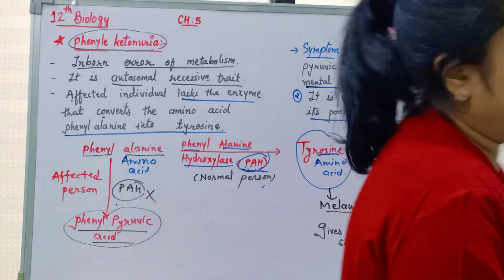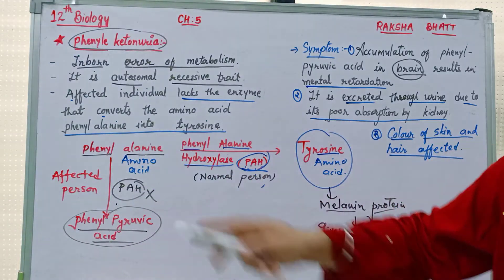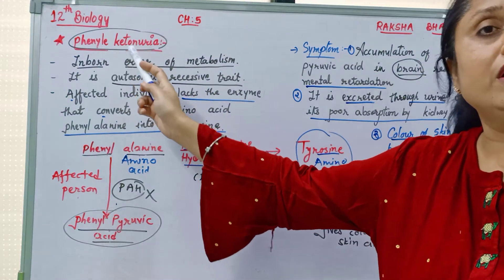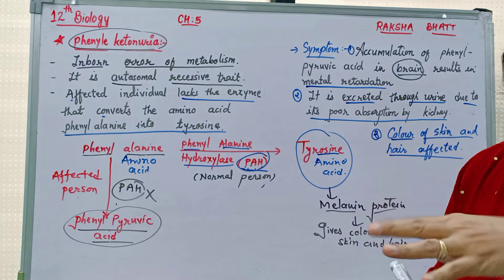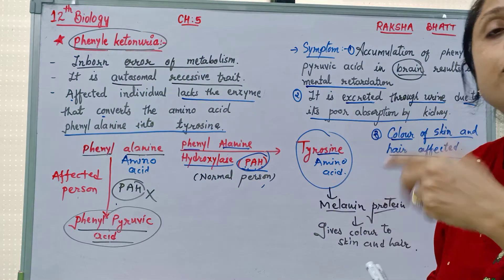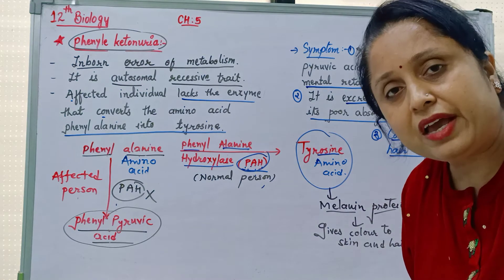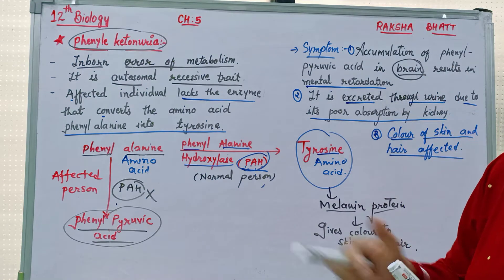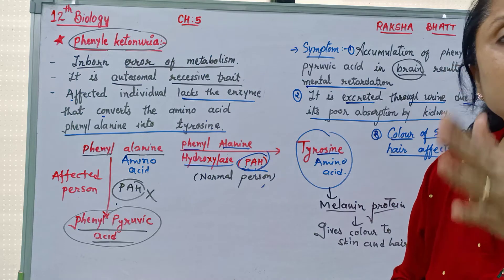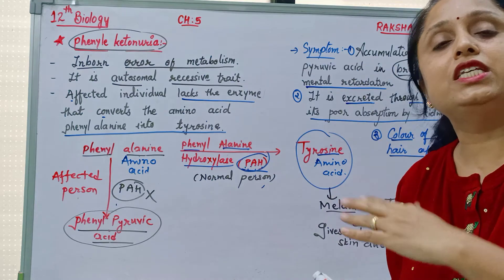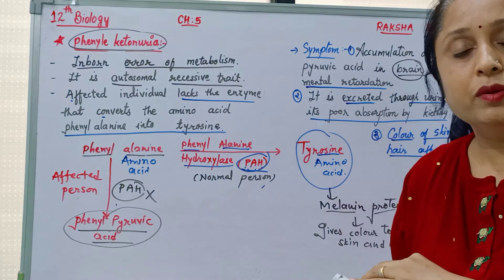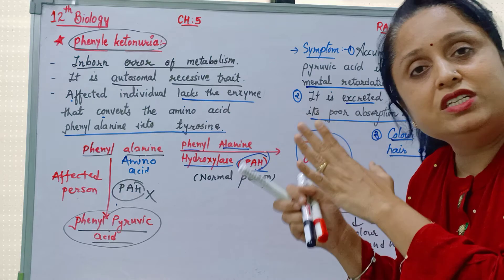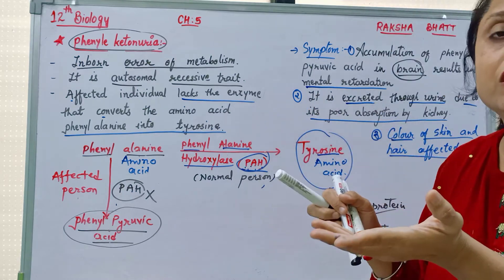This is an inborn error of metabolism — the problem occurs when the enzyme is not synthesized. It is an autosomal recessive trait, meaning the recessive genes are present on the autosomes — the first 22 pairs of chromosomes.